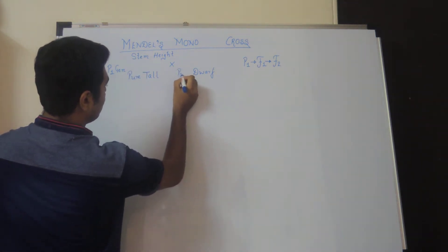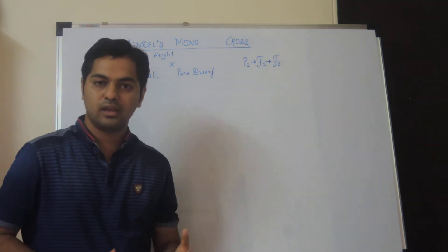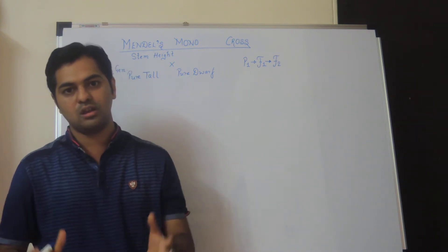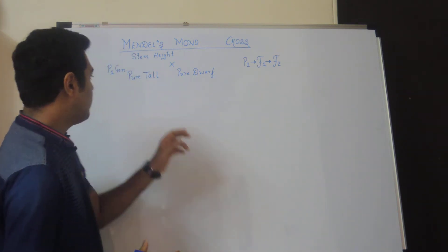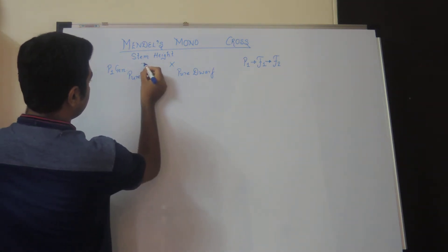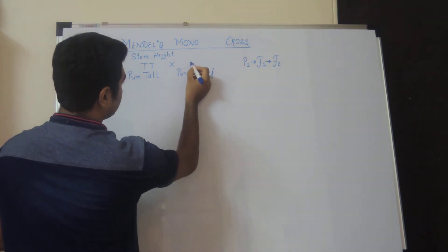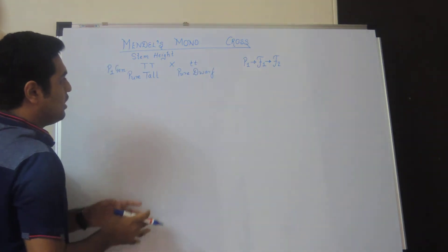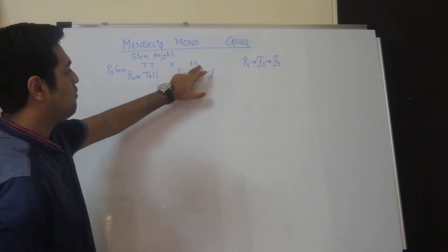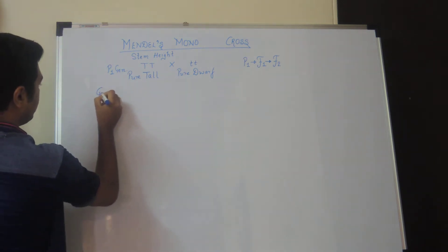Pure tall was crossed with pure dwarf. The word 'pure' means homozygous — when both alleles of a particular gene are the same. For tallness, both alleles are similar, so they are represented as TT (capital T, capital T). For dwarfness, they are represented as tt (small t, small t), since dwarfness is recessive and represented in lowercase.